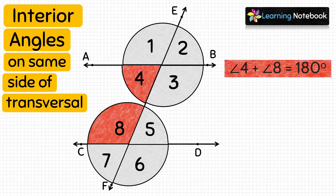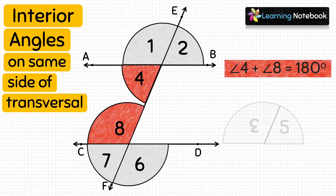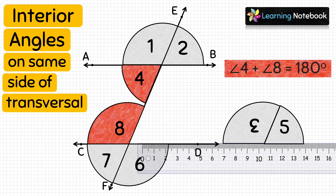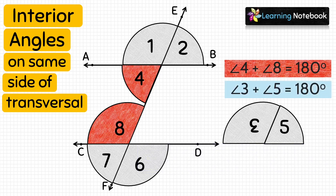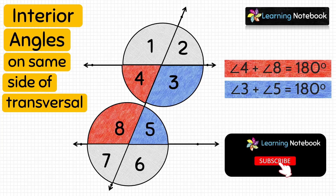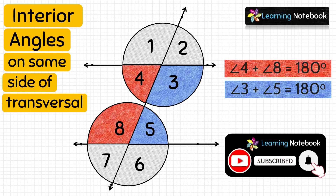Similarly, take angle 3 and angle 5 and place them as shown. We use a ruler to check that their non-common arms are in a straight line, so angle 3 plus angle 5 equals 180°. We have proved that the pairs of interior angles on the same side of the transversal are supplementary.